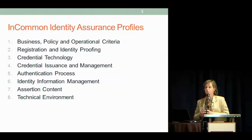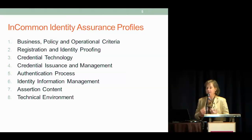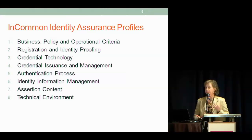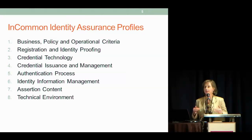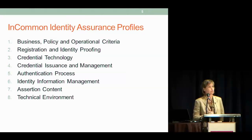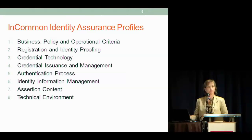The InCommon Assurance Profiles have eight sections covering the full scope of identity assurance. There's also a framework document describing how trust fits together. The basis of trust has a business and policy aspect — we must verify the organization first, then the individual's registration and identity proofing, the authentication technology token, how it's distributed, and how the information conveyed to the service provider is protected.